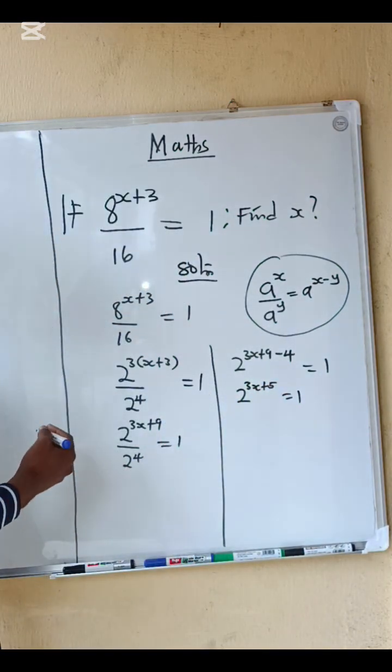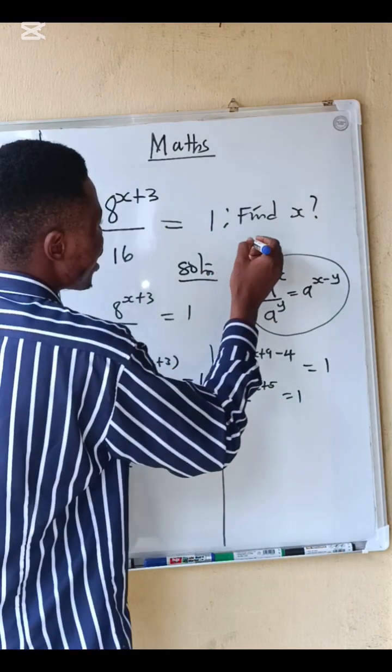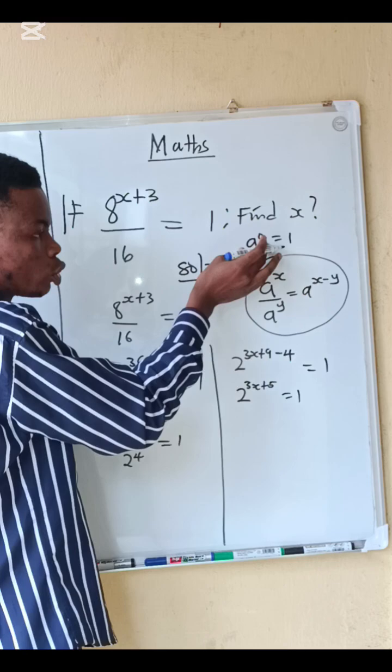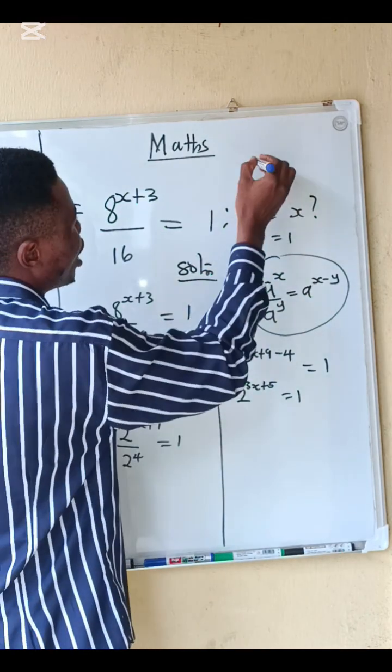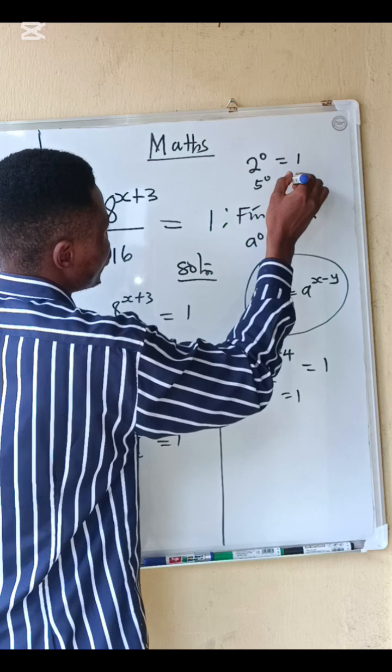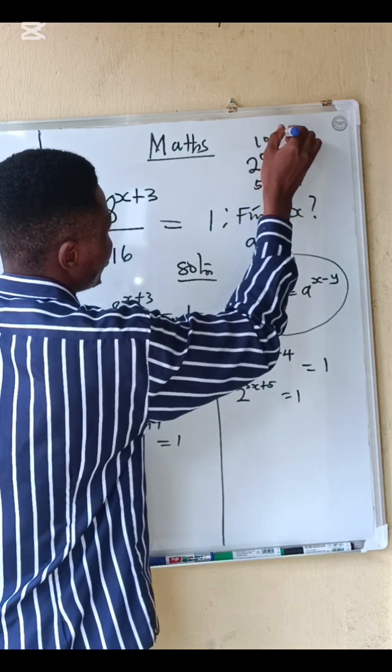Remember from zero index law of indices that a power 0 equals to 1. This is applicable to all numbers. If you have 2 power 0, you get 1. 5 power 0, you get 1. 100 power 0, you get 1.